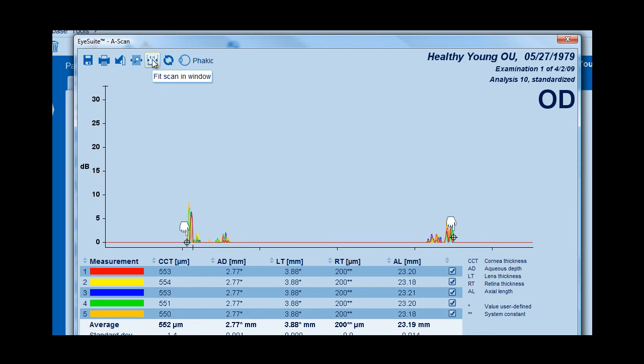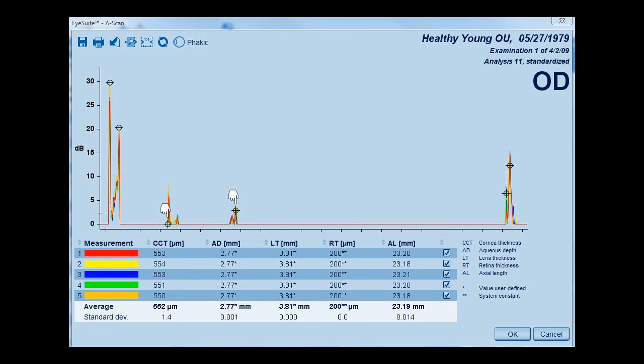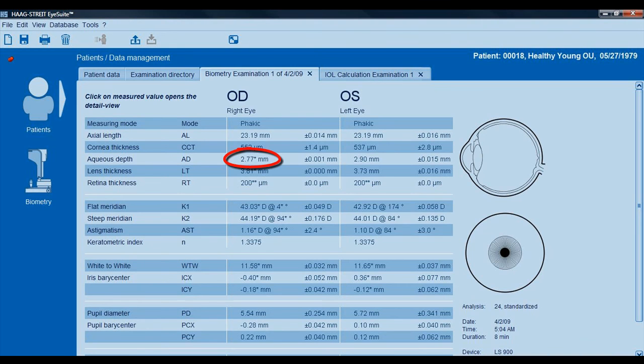To exit the magnification screen, simply press the icon labeled 1 to 1. Adjusted results will have the notation of a hand pointing down. They will also be displayed with an asterisk on both the A-scan screen as well as the results overview page. Right and left eye measurements will open independently.